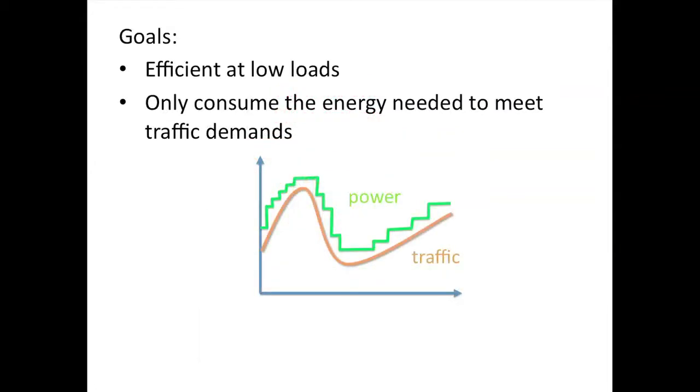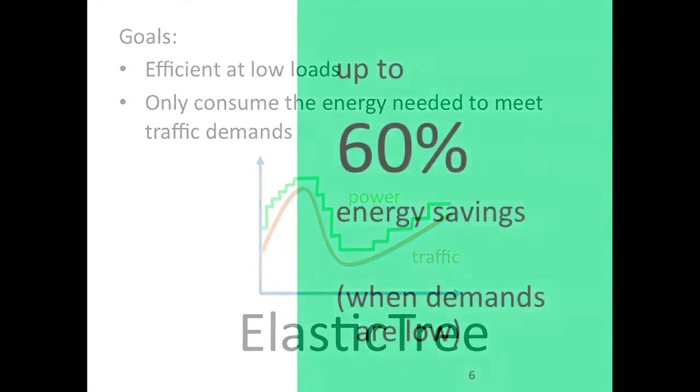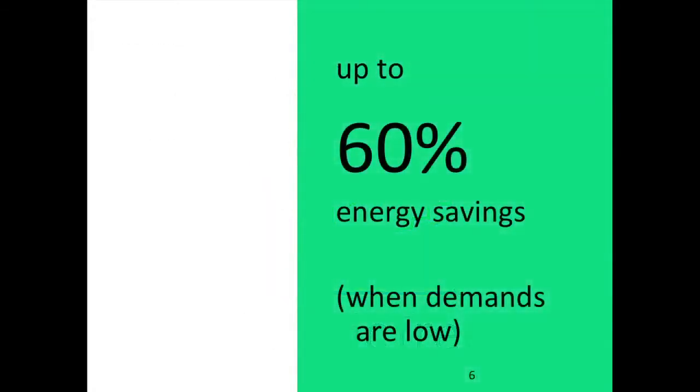While we can't buy switches today that are efficient at low loads, we can use these switches to make a network that is. We've built a system to do this, called Elastic Tree, and it can reduce the energy consumed by a data center network by up to 60% by simply turning off unneeded links and switches.